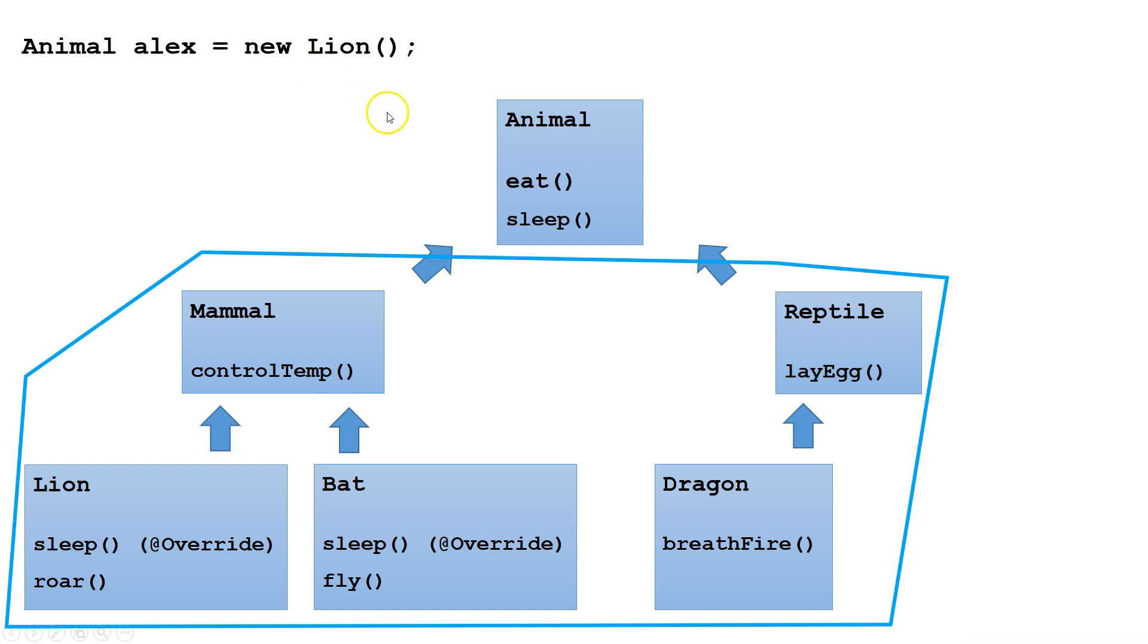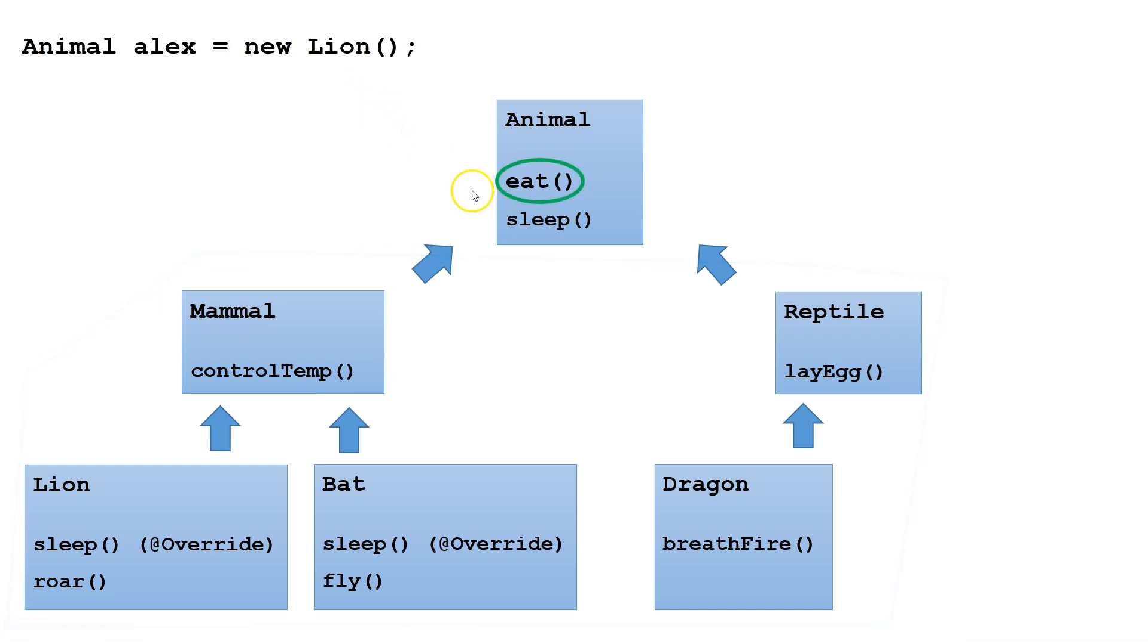Alex will be able to access several methods. First, it will be able to access eat, which is inherited from Animal. Second, it will be able to access sleep, which is overridden in Lion, and it's overridden from Animal.